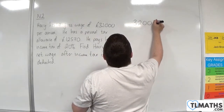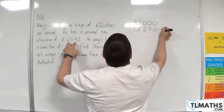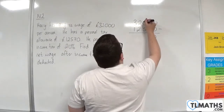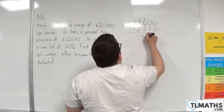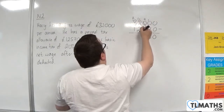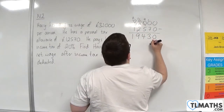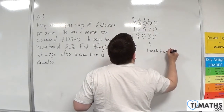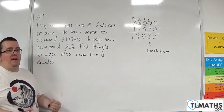So, £32,000 take away £12,570. We need to borrow: 10 take away 7 is 3, 9 take away 5 is 4, 11 take away 2 is 9, 2 take away 1 is 1. That gives us £19,430 — that is Harry's taxable income, the amount that he earns that can be taxed by income tax.